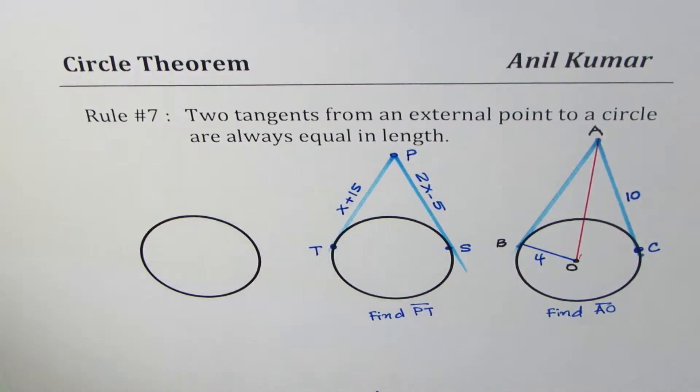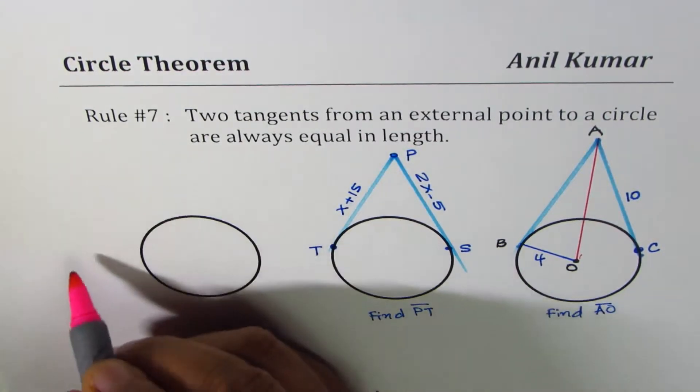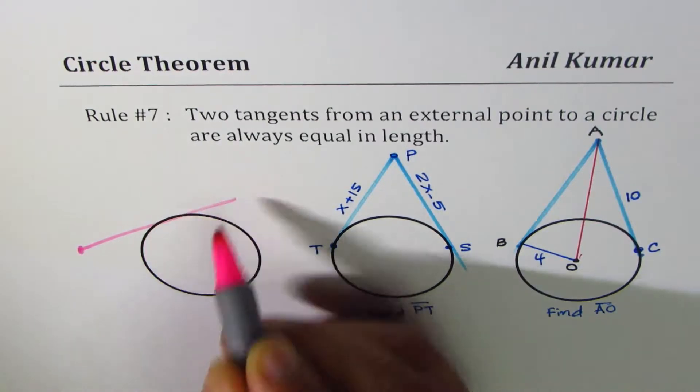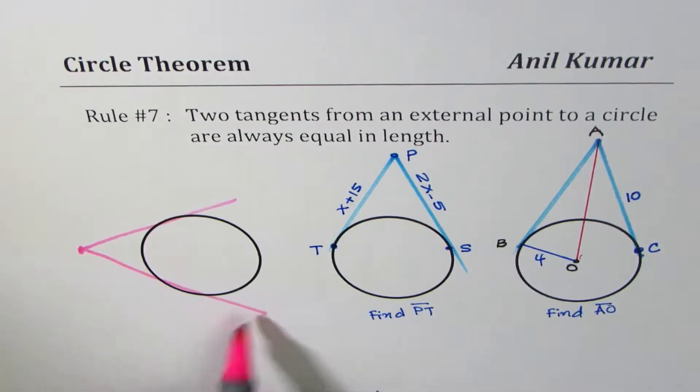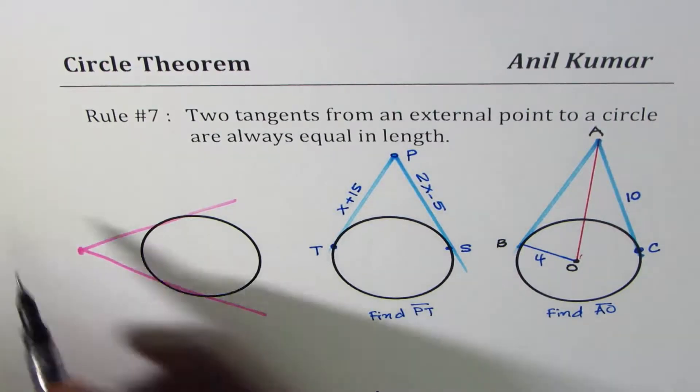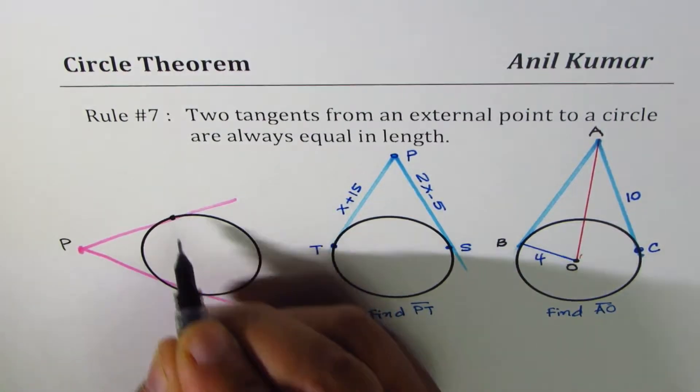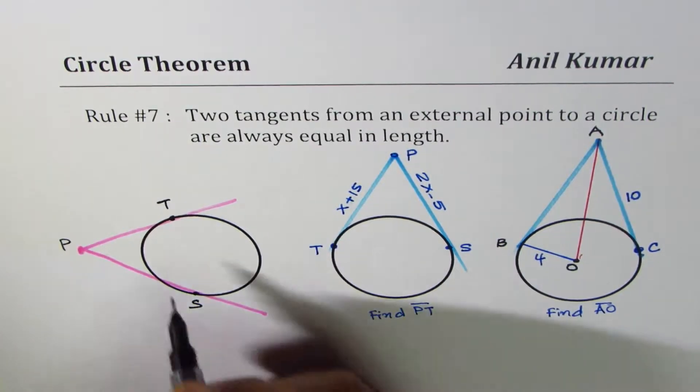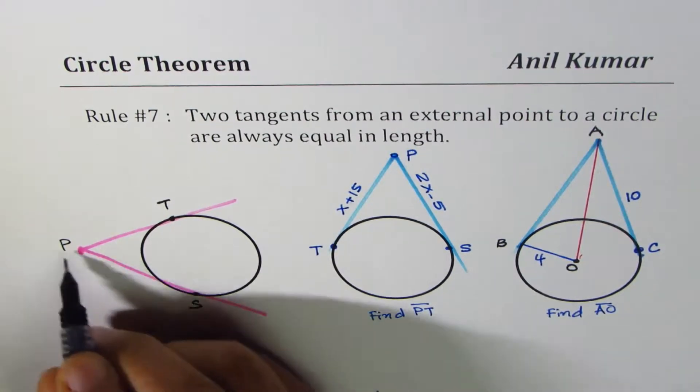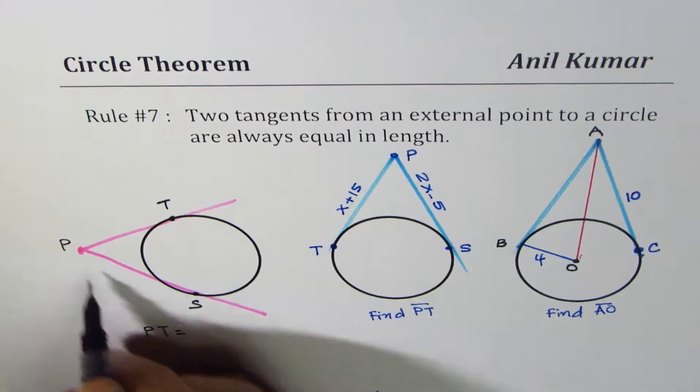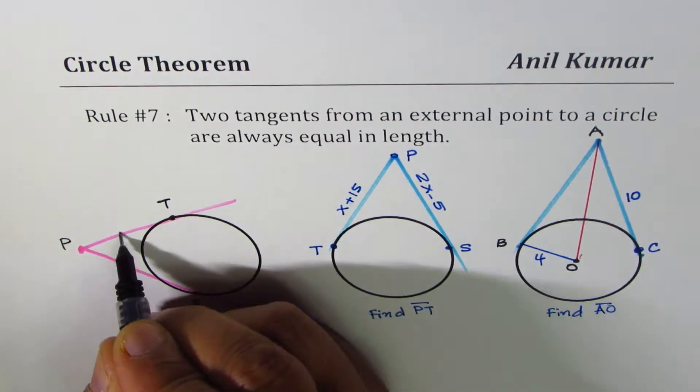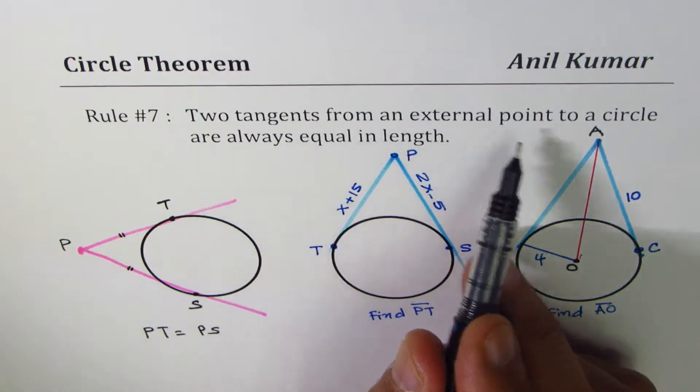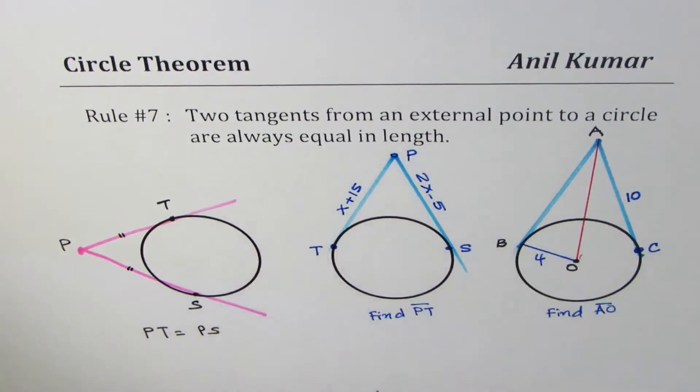So that is to say that if I have a circle and an external point outside, from any external point we can always draw two tangents. Let's say this is one and this is the other one. The rule says that if the point P touches the circle at, let's say, T and S, in that case, length of each tangent PT is equal to PS. So these two sides are equal. So two tangents from an external point to a circle are always equal in length.